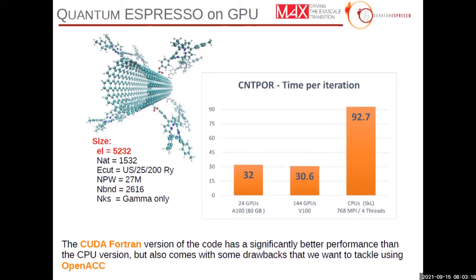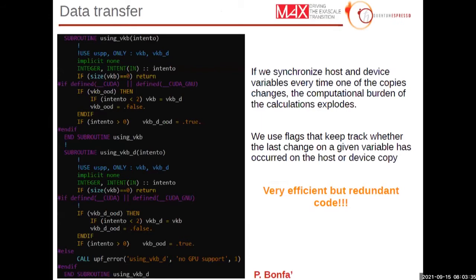The reason we started moving to OpenACC was to cope with limitations in the way the CUDA Fortran code was written for Quantum ESPRESSO. One general problem is data transfer. Since Quantum ESPRESSO is a complex suite of code with many modules and sub-programs, it is very difficult to decide whether a given variable should be kept on host or device. We cannot make this choice once at the beginning — we have to keep both copies, working on host or device copies depending on the part of the code we are working on. If we try to synchronize variables every time one of the two copies is changed, the computational burden completely explodes. So this is not an option.